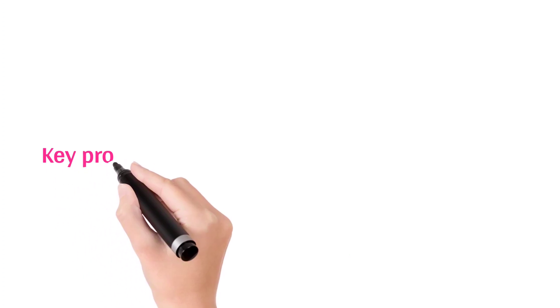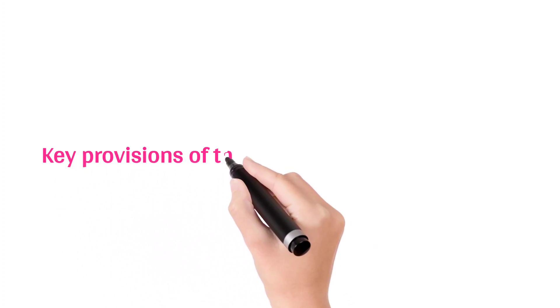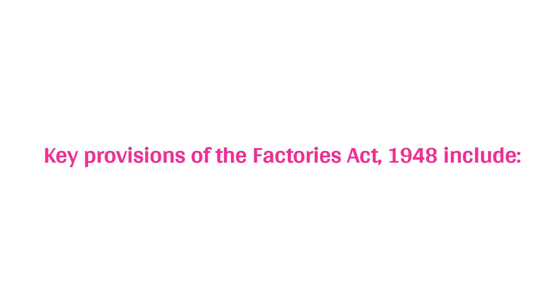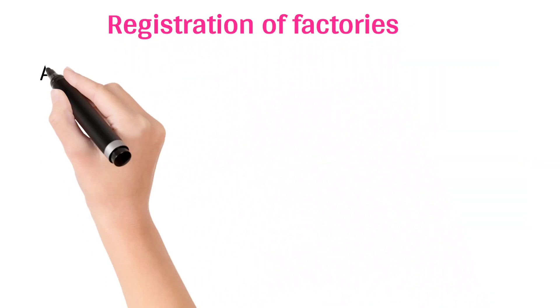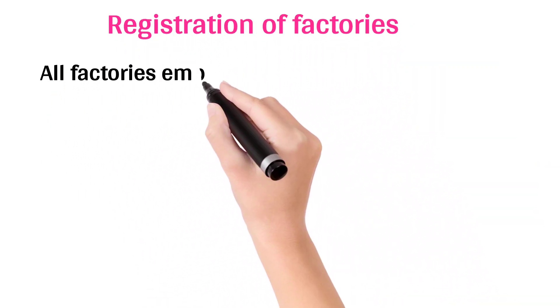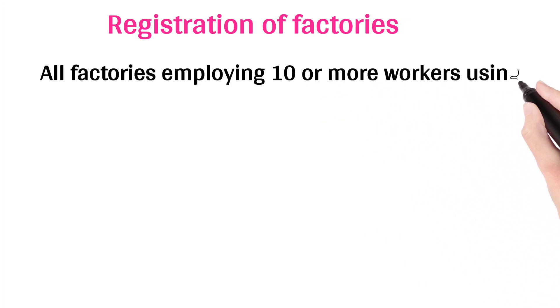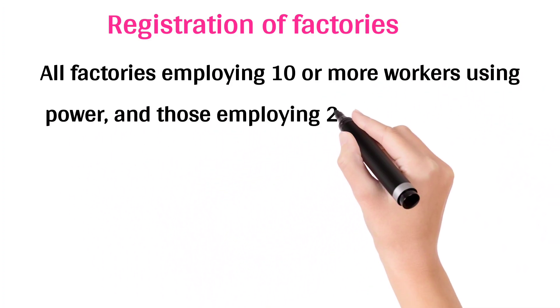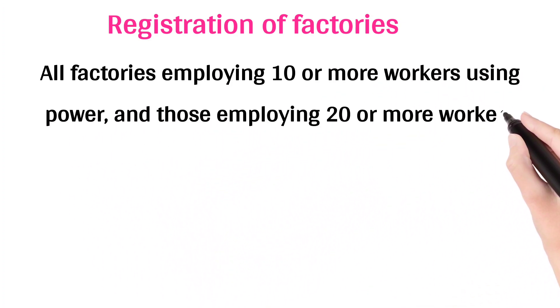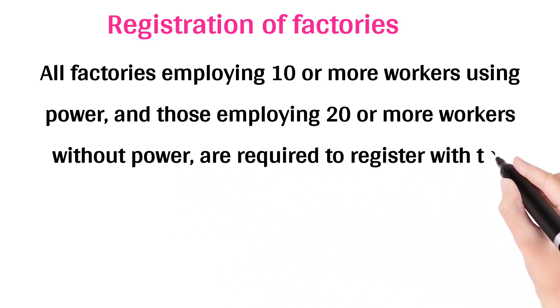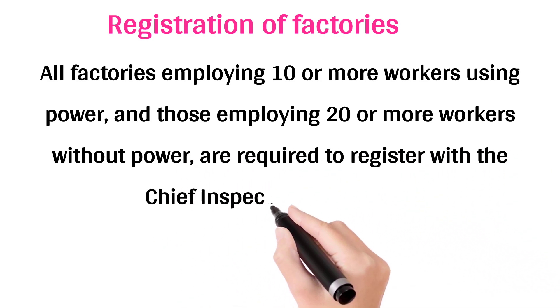Key provisions of the Factories Act, 1948 include Registration of Factories. All factories employing 10 or more workers using power, and those employing 20 or more workers without power, are required to register with the Chief Inspector of Factories.